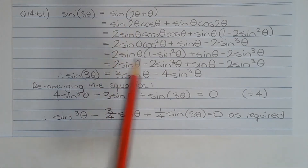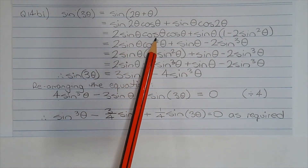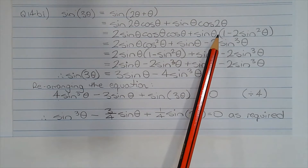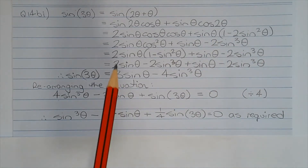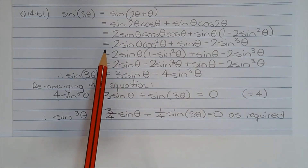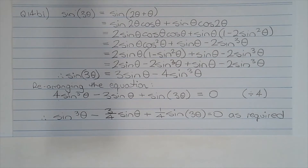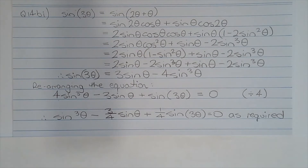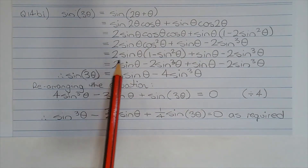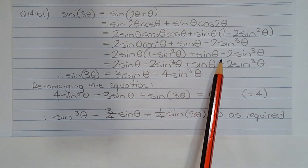Now we have the sin of a double angle here, and the cosine of a double angle here. So expanding all that, we get 2 sin theta cos theta multiplied by cos theta plus sin theta multiplied by 1 minus 2 sin squared theta. Expanding the brackets, we get 2 sin theta cos squared theta plus sin theta minus 2 sin cubed theta. And expressing cos squared theta in terms of sin squared theta using a Pythagorean identity, that equals 2 sin theta times 1 minus sin squared theta plus sin theta minus 2 sin cubed theta.